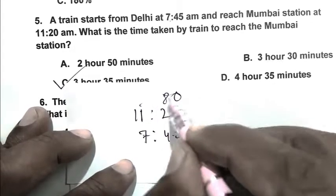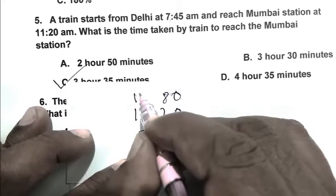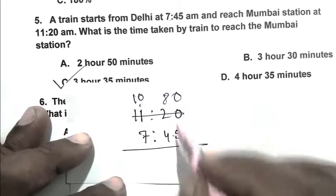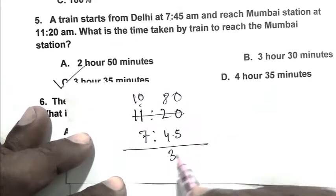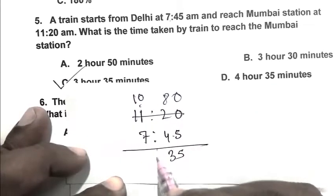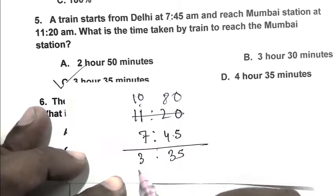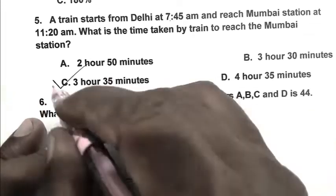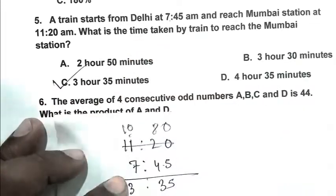We take 1 hour to the minutes side, so 11:20 becomes 10 hours 80 minutes. Subtracting 7:45, we get 3 hours 35 minutes. So C is the right answer.